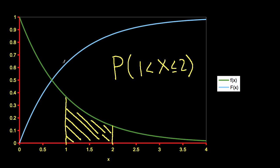However, as we also saw, I can take the cumulative distribution function, evaluate it at 2, which would give me this point here, evaluate it at 1, and the difference between this value and this value would give me this probability, which also turns out to be the area under the density function.